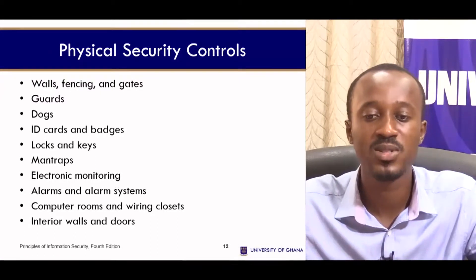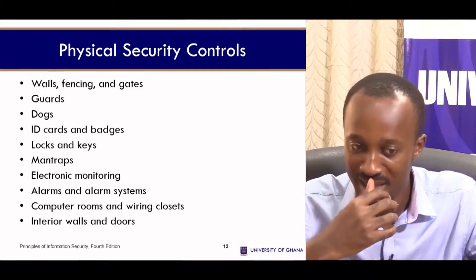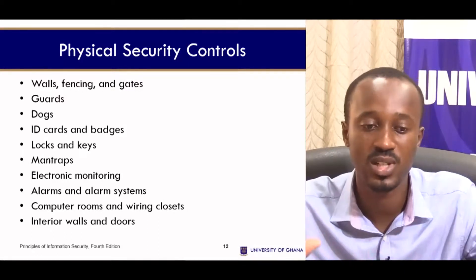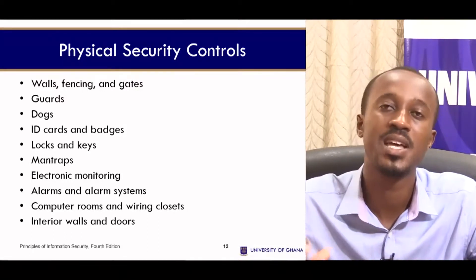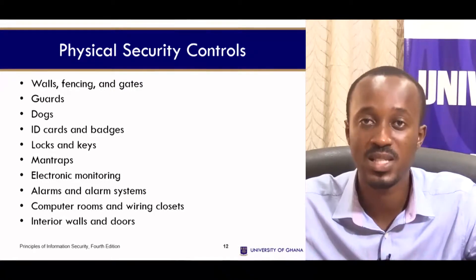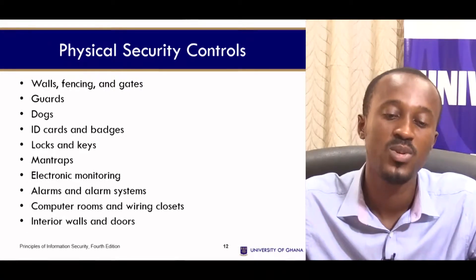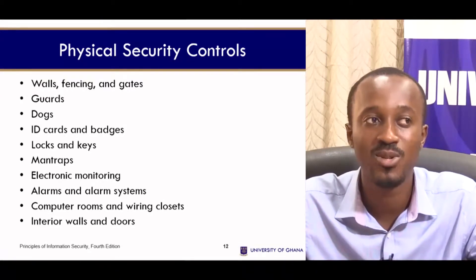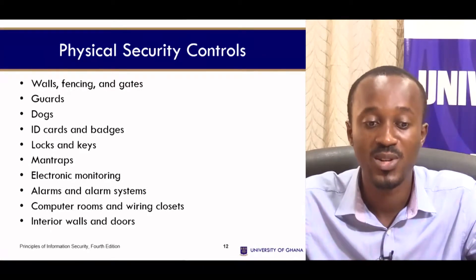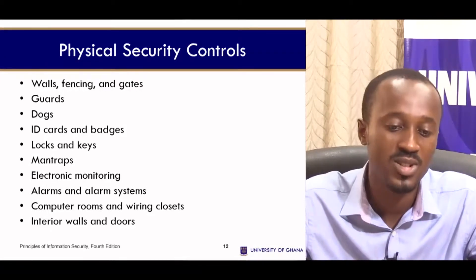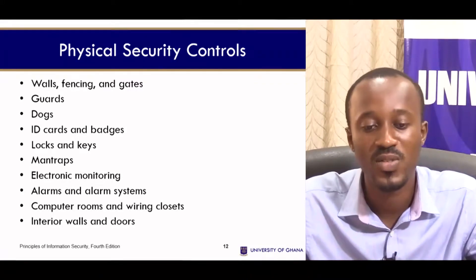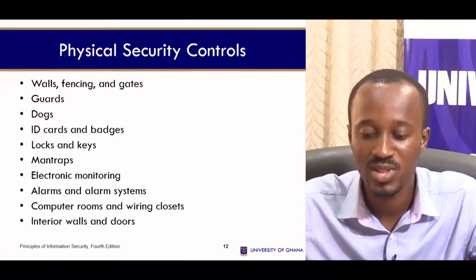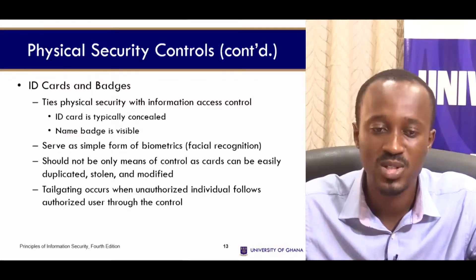Physical security controls include walls, fences, and gates. You can have guards and dogs. ID cards and badges are given to authorized persons so they are able to have access to the physical location. Locks and keys are placed on doors and rooms where unauthorized persons should not enter. You also have man traps, electronic monitoring, CCTV cameras, alarm systems, computer rooms, wired closets, and interior walls and doors.